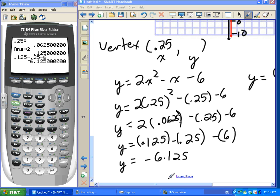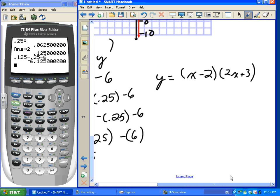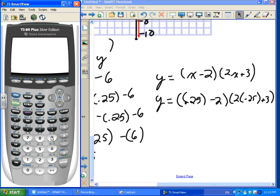I'm just going to scroll over to the factor form and try it over there also. So y equals, we substitute our 0.25 in, just to prove this, 2 times 0.25 plus 3. I know I've got a lot of brackets there. 0.25 subtract 2 equals negative 0.175.